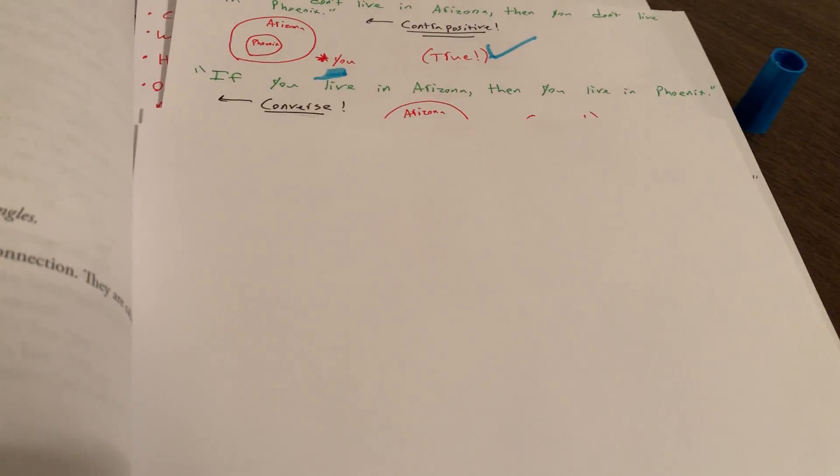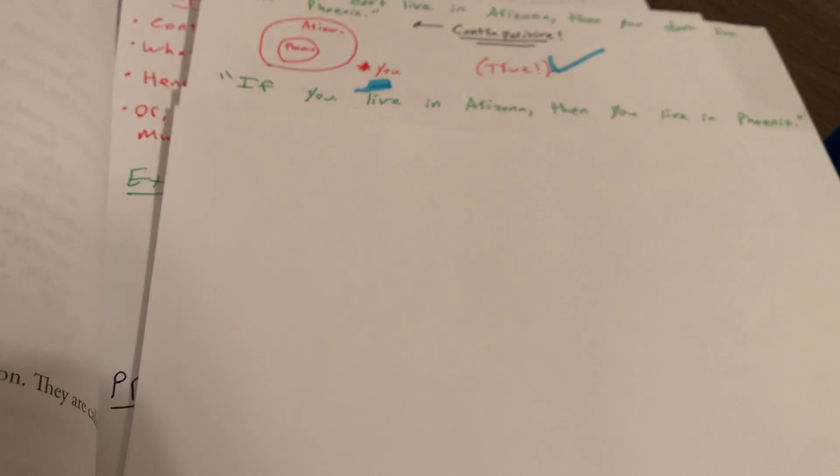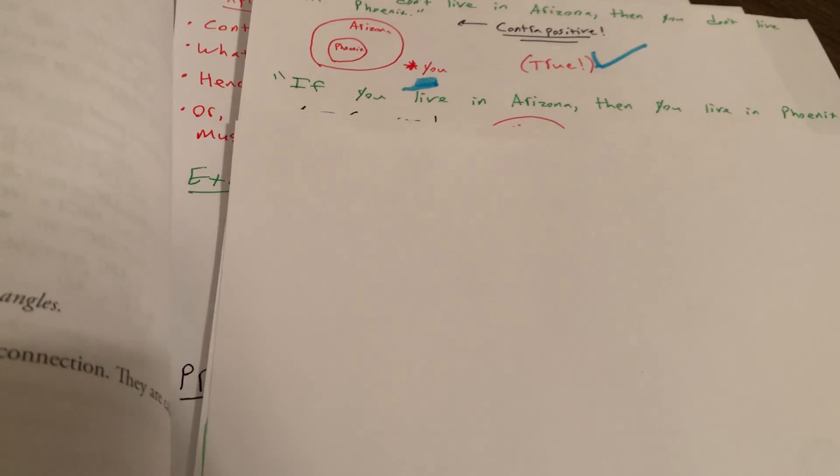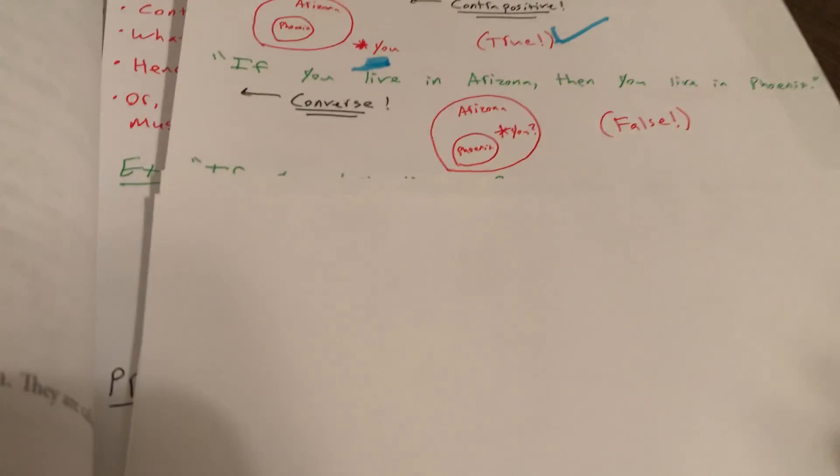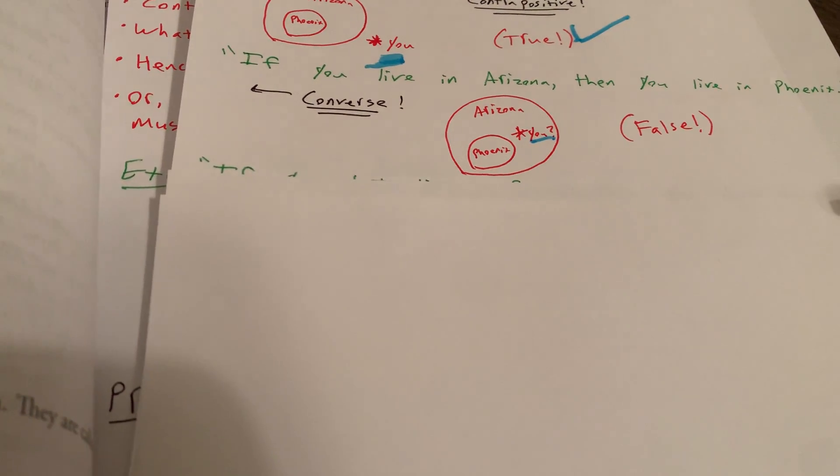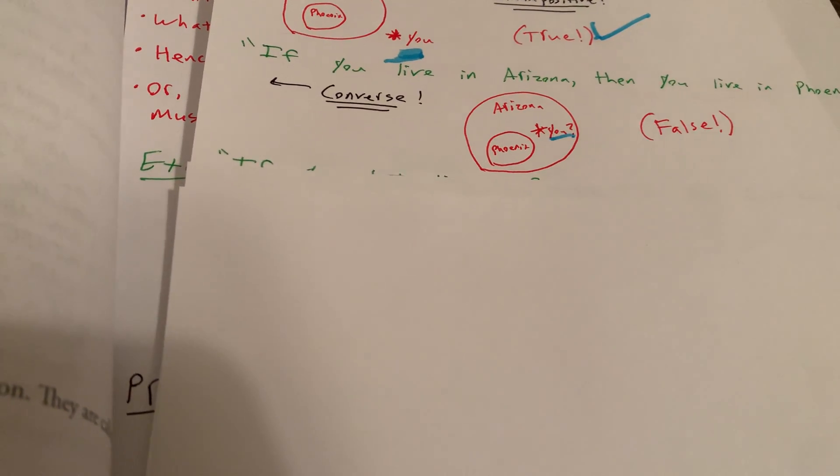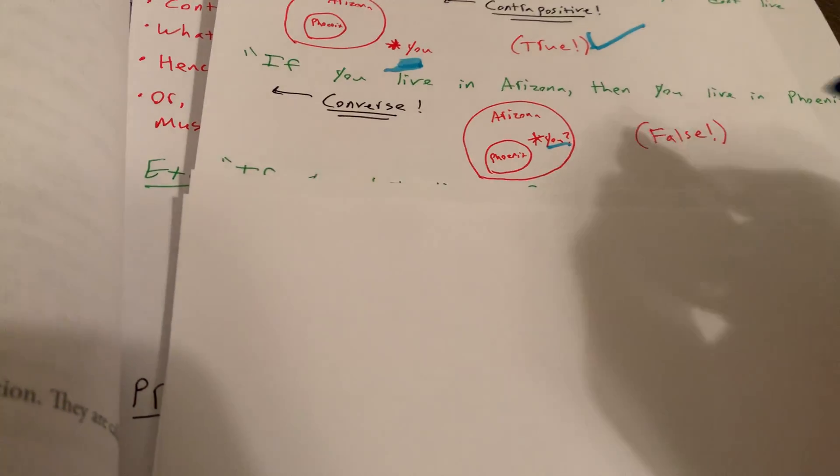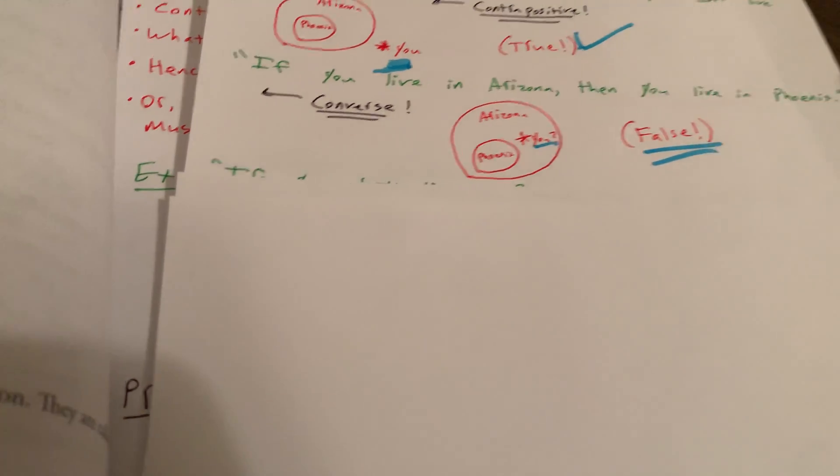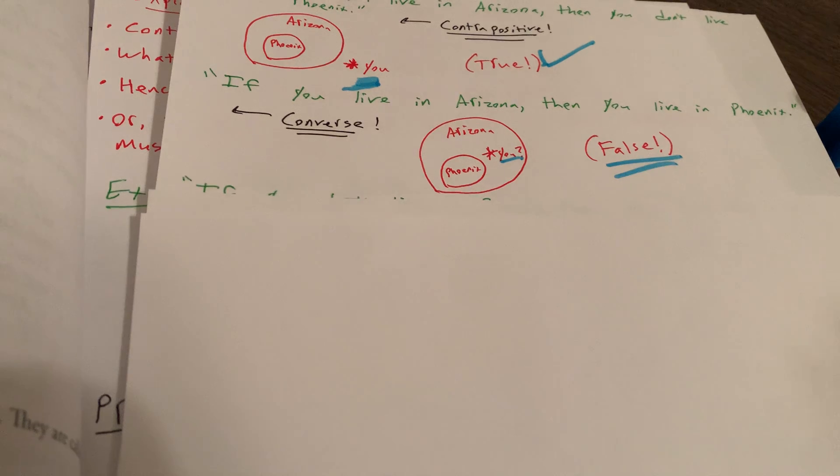How about this one? Think about the converse. If you live in Arizona, then you live in Phoenix. Well, not necessarily, so that's definitely false. And we can illustrate this. So maybe you live over here, let's say in Tempe or Tucson or somewhere else. So it is a false proposition. We can think of a contrary example. You can live in Arizona without living in Phoenix.